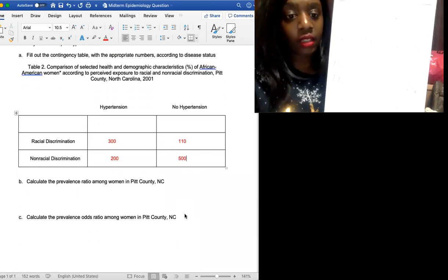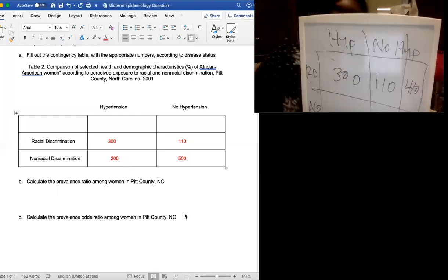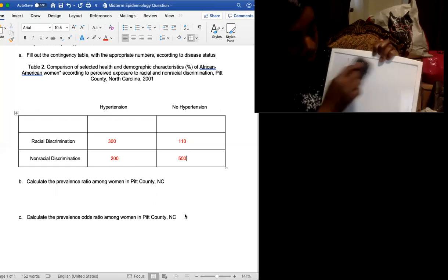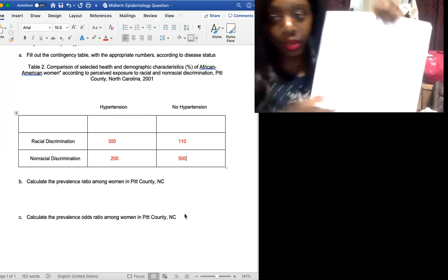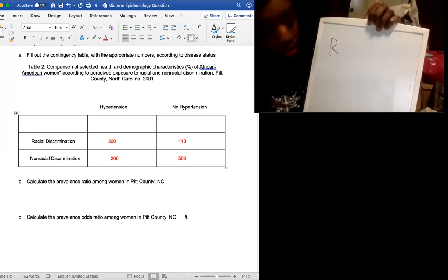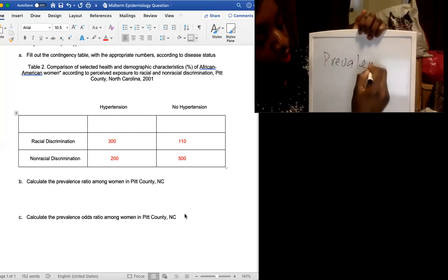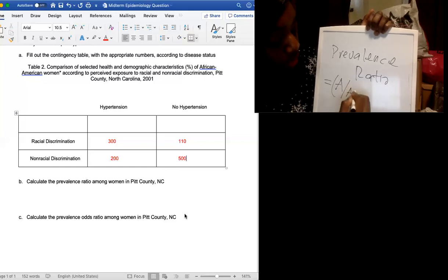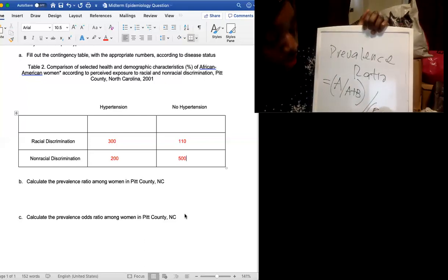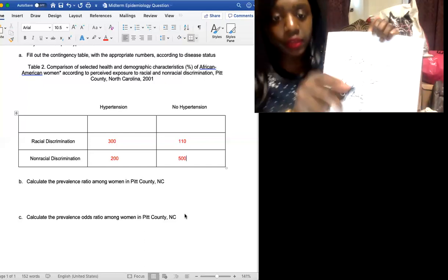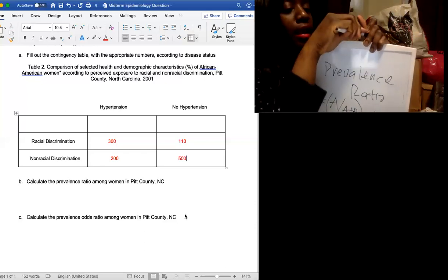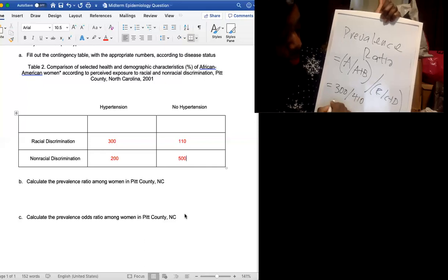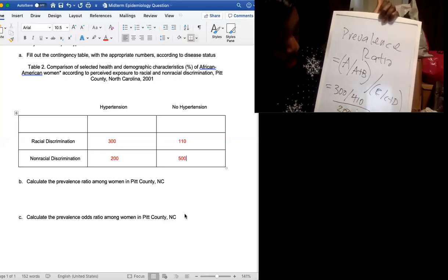Now based on this table it says calculate the prevalence ratio among women in Pitt County, North Carolina. Let's do this. And we have to know the equation for prevalence ratio. So this is prevalence ratio. And that's a divided by a plus b over c divided by c plus d. So we have some important numbers to fill in based on that two by two table.